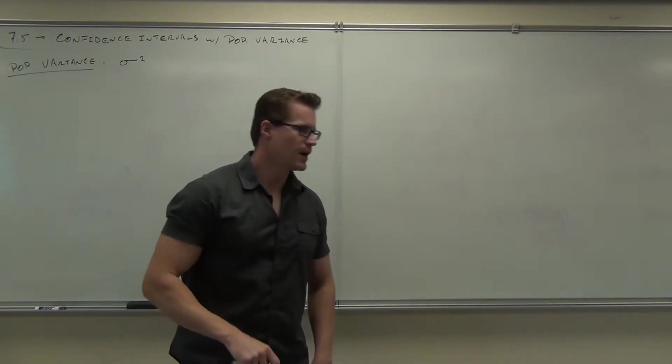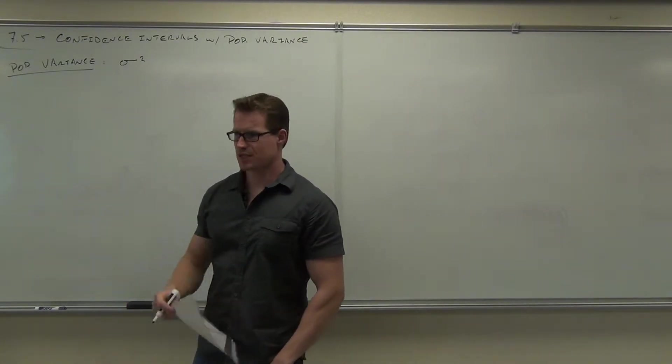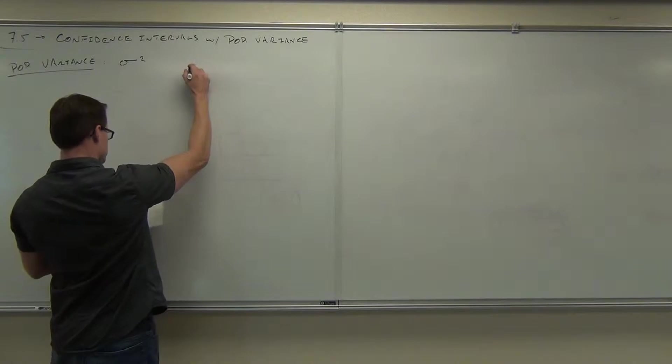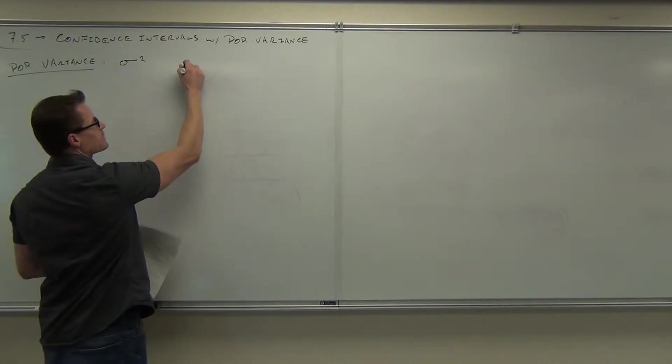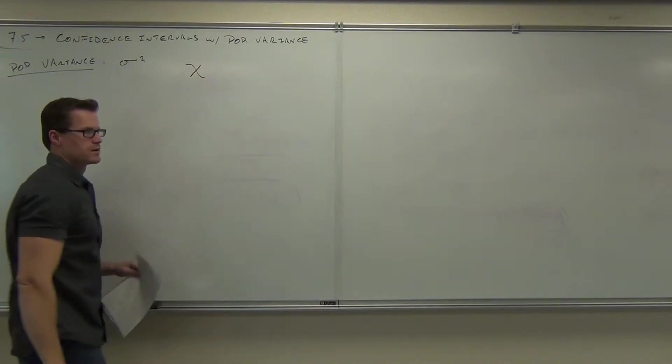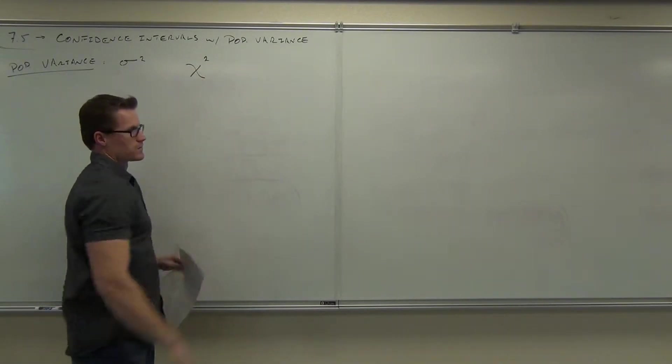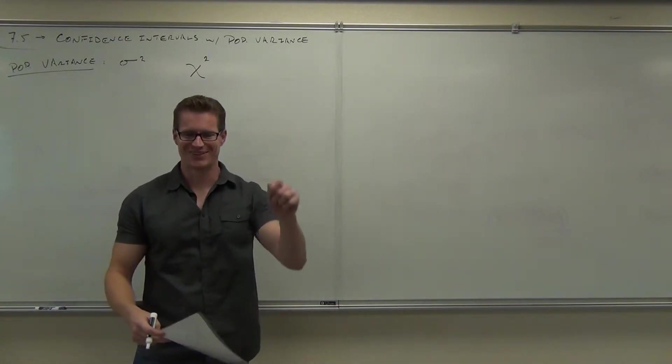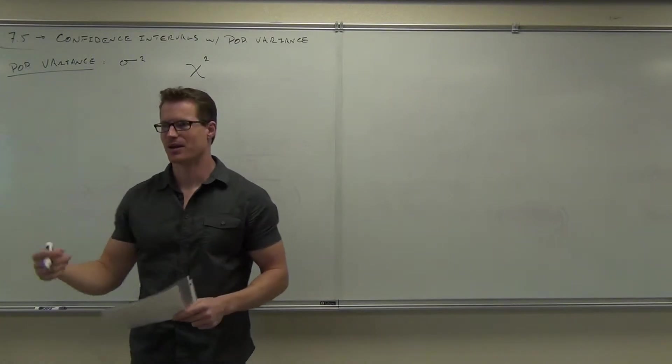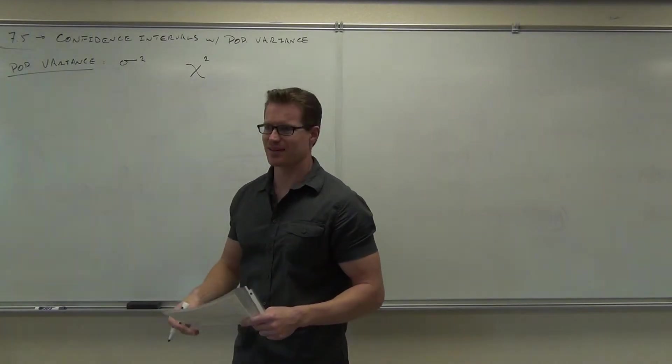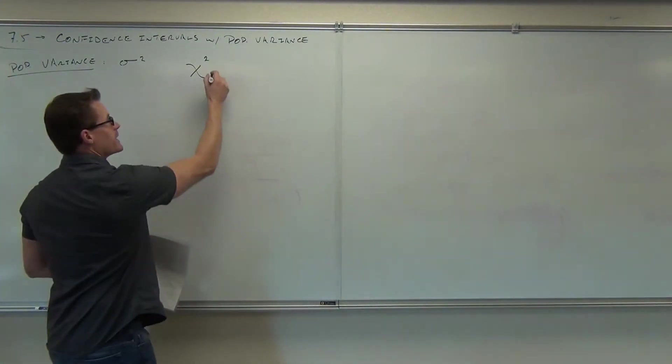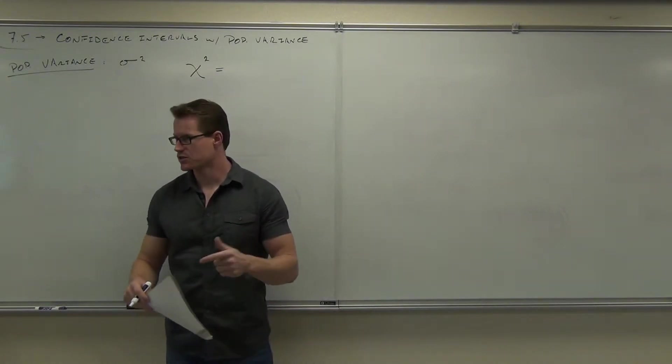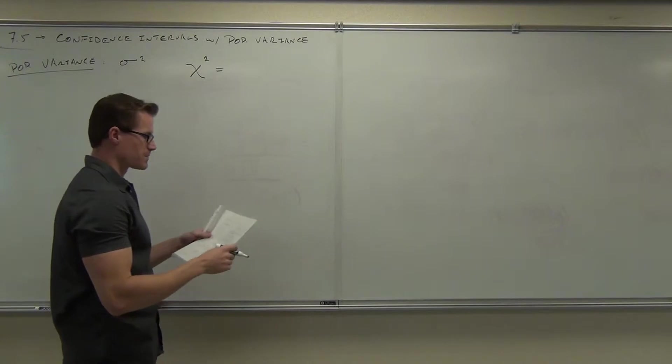Now I'm going to give you a definition. How we look at the distribution of our variance is with something called a chi-squared distribution. Chi-squared, it's like you're making a big X. One of them's curvy and one of them's straight. And here's how you find out a chi-squared test statistic or the marker for chi-squared according to your population variance.